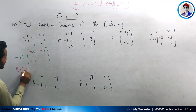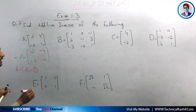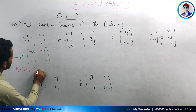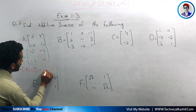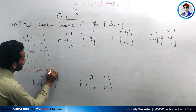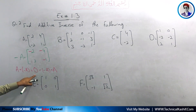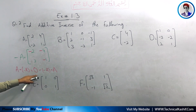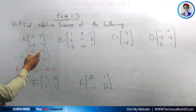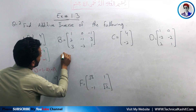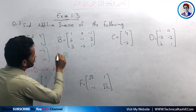We can verify: A plus (minus A) equals the null matrix, which is the additive identity. Similarly, minus A plus A also equals the null matrix, the additive identity.